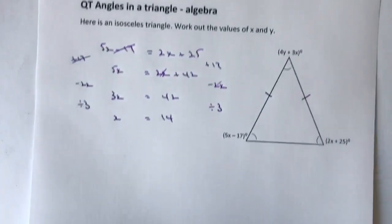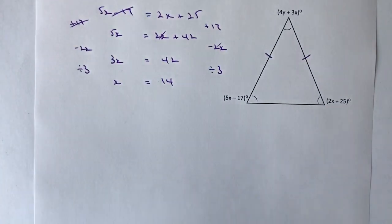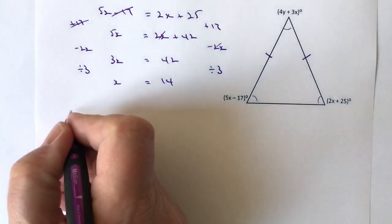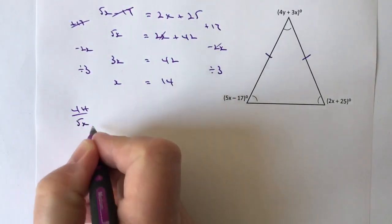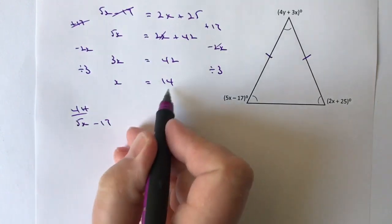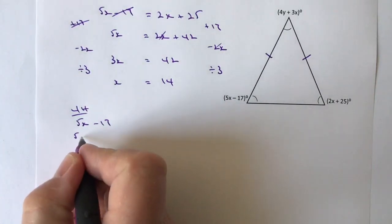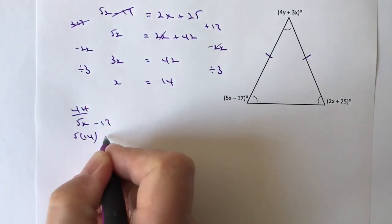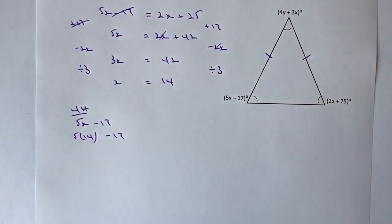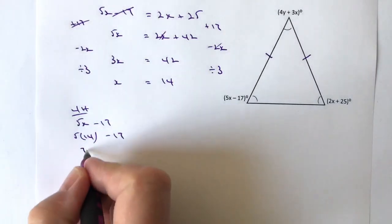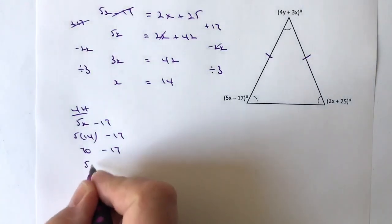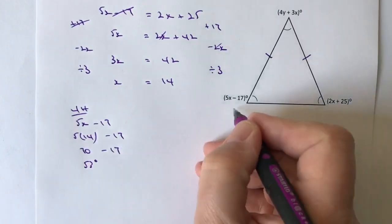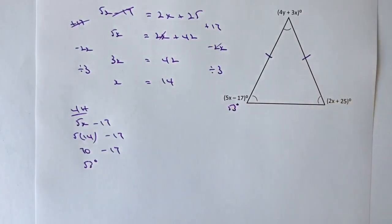First, I'll work out the two base angles. On the left hand side I've got 5x minus 17. If I plug the value of 14 into that, I get 5 times 14 minus 17, which is 70 minus 17. So on the left hand side we know the value is 53 degrees.